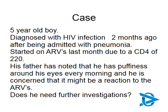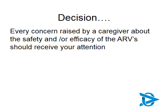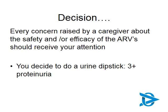Let's move on to renal conditions. We have a specific case of a five-year-old boy diagnosed with HIV infection two months ago after being admitted with pneumonia. He was started on ARVs the previous month due to a CD4 of 220. His father has noted puffiness around his eyes every morning and is concerned it might be a reaction to the ARVs. Firstly, every concern raised by a caregiver about the safety or efficacy of ARVs should receive your attention — never be dismissive. Quite often, symptoms develop after starting ARVs and patients may mistakenly believe it is the treatment. In this child, a urine dipstick reveals three-plus proteinuria.